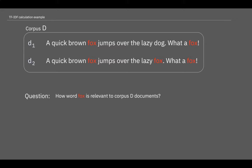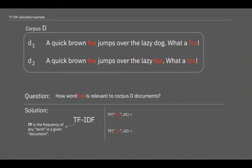Let's go to the solution part. Let's start with some definitions. What is TF? In the first part of this calculation we need to clarify that TF is the frequency of any term in a given document. We need to calculate TF for document number 1 and document number 2 for the word fox.